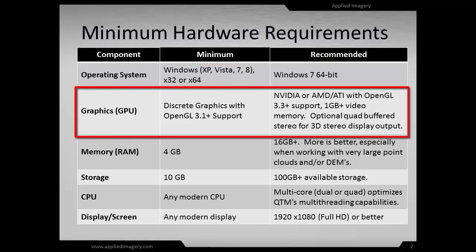Second, and perhaps most important, is the graphics processing unit, known as the GPU. QtModeler requires discrete graphics with OpenGL 3.1 or newer. OpenGL is the graphics processing language. We recommend OpenGL 3.3 or higher running on an NVIDIA or ATI GPU. If 3D display output is required, quad-buffered stereo is also required.